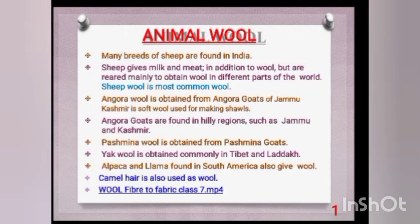There are many breeds of sheep found in India. Angora wool is obtained from the Angora rabbit or goat. Pashmina wool is obtained from Pashmina goats. Camel hair is also used as wool. These are all examples of animal wool sources.